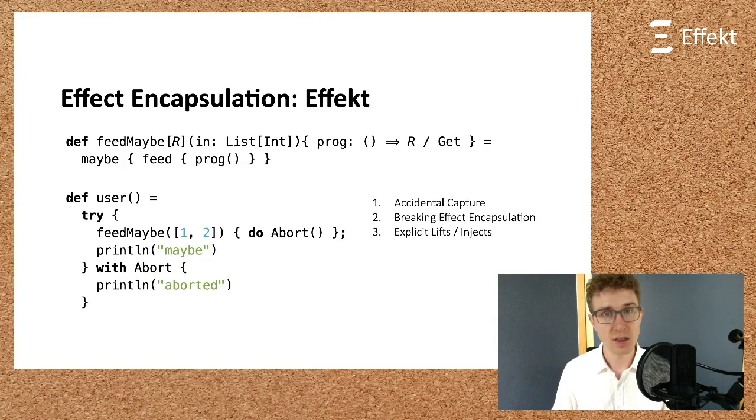In Effekt, the above example just type checks as is. The mandatory effect signature on prog informs the operational semantics to only bind a capability for get, but not for abort. The user code correctly closes over the abort capability, and the program prints aborted. To summarize, the combination of type-directed semantics and the translation to capability-passing style allows us to not require any term-level lifting annotations. The semantics just fulfills what the types promise.